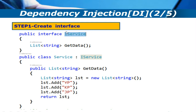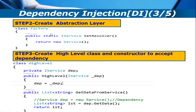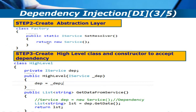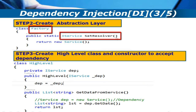So this is the first change I need to make. In the second step I need to create a factory class. I am calling this class the abstraction layer, and inside this factory class I am creating a function called set resolver, which creates the object of your low level class — the creation of the dependency object.